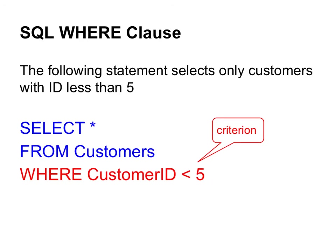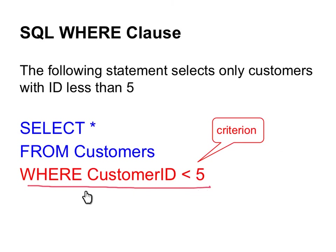Here we have another example of the WHERE clause. This statement selects only those customers with CustomerID less than 5. Therefore we write the WHERE clause as: WHERE CustomerID < 5. This is the filter condition or the criterion.